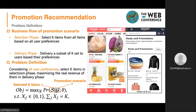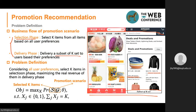Here is an example of our promotional recommendations in the Taobao and Amazon apps. We will select some items, like clothes, and then give them some discount — for example, 13% off. The business flow of the promotional scenario includes two phases. The first is the selection phase, where we aim to select k items from all items based on all user preferences. Then the delivery phase tries to deliver a subset of k items to users based on their preferences.